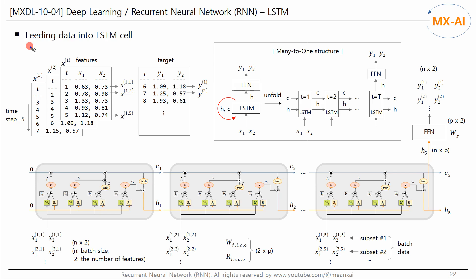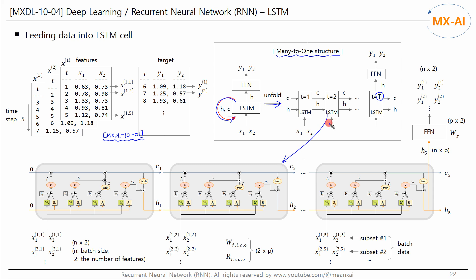Next, let's look at how data is fed into the LSTM. The structure of the dataset is identical to that of existing RNNs. This is the dataset for a many-to-one RNN model used for time series forecasting. This is a many-to-one LSTM model. Like a traditional RNN, the LSTM layer repeats for a given number of time steps T. Unfolding it into T time steps, only the structure within each time step has changed from the existing RNN — the way of feeding data is completely the same.